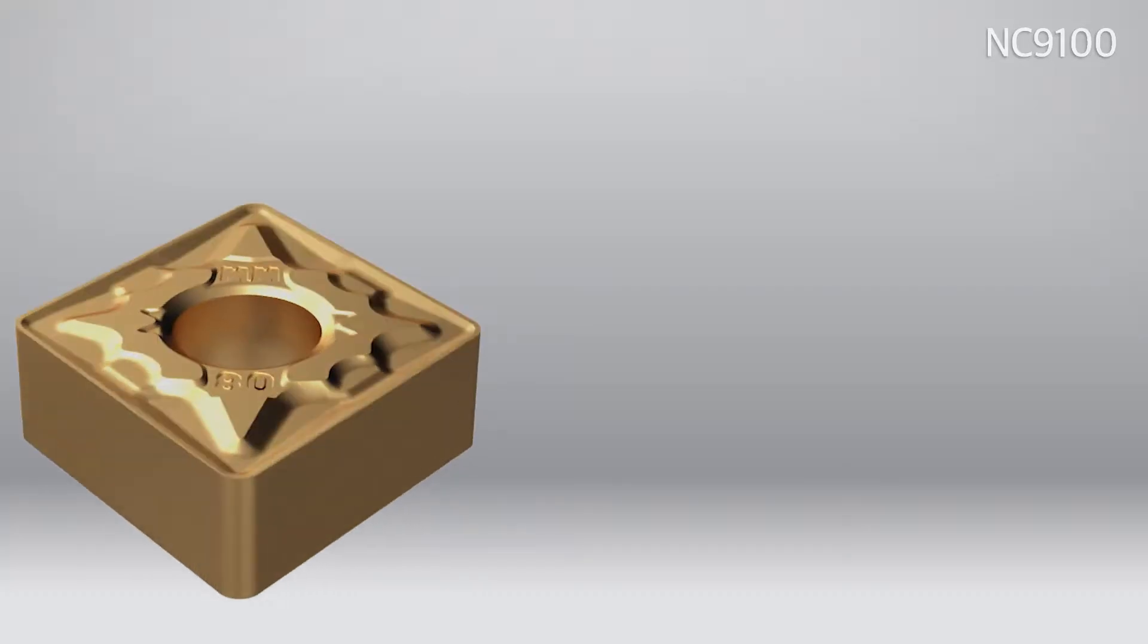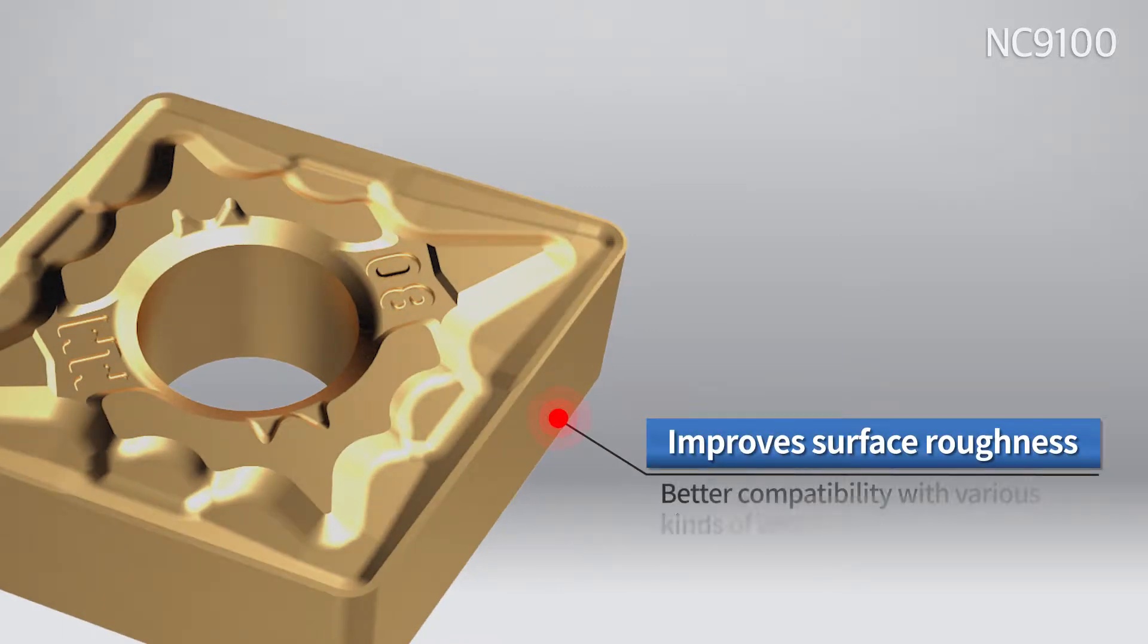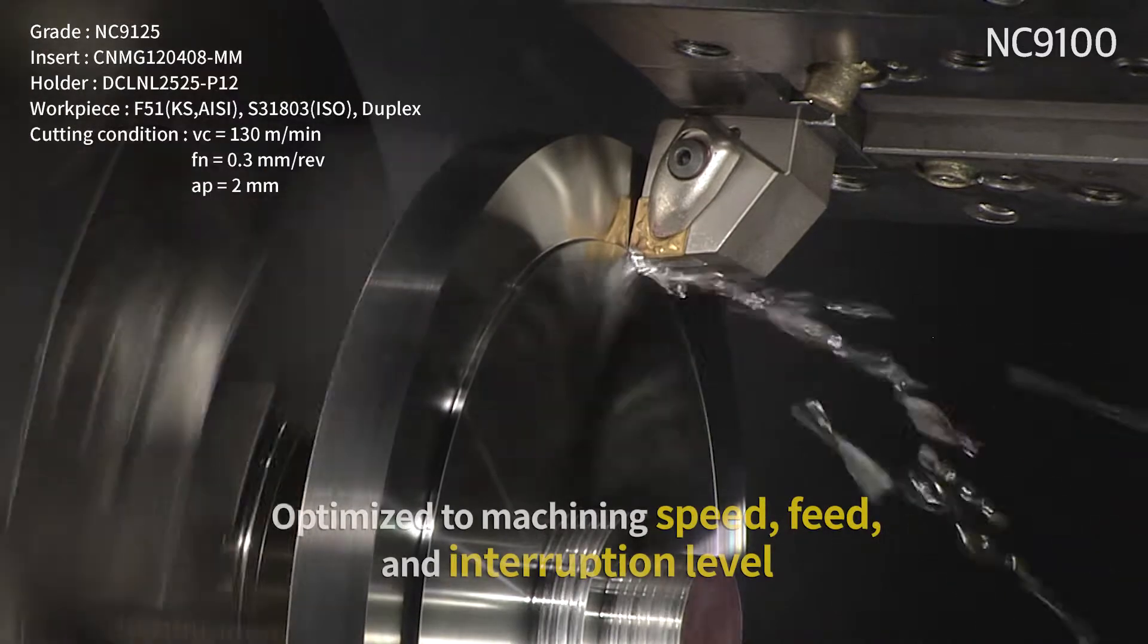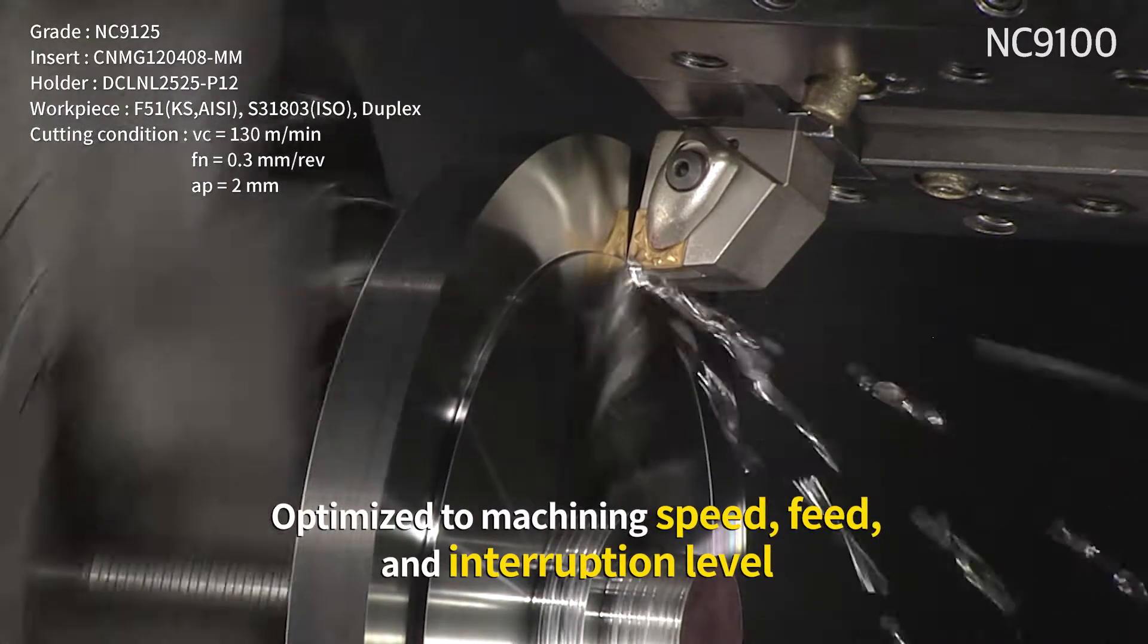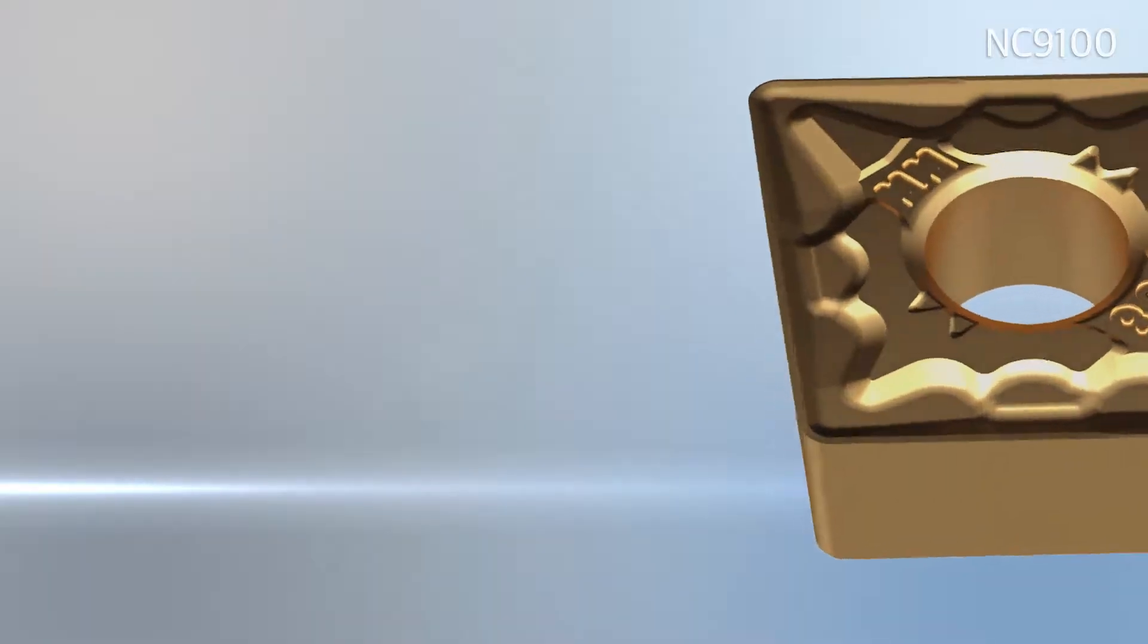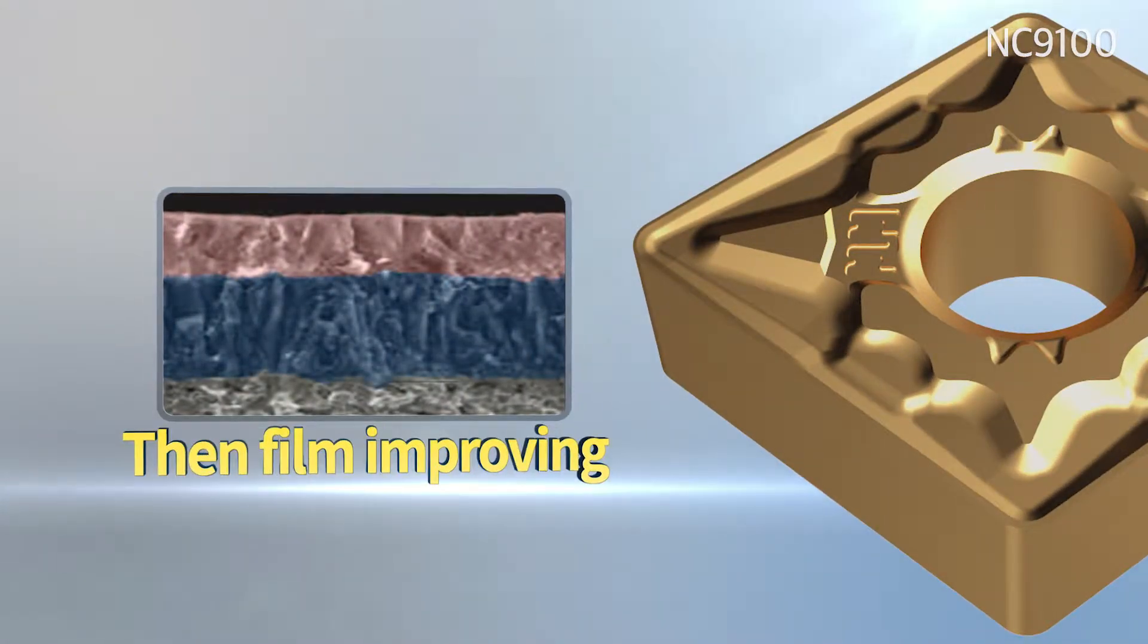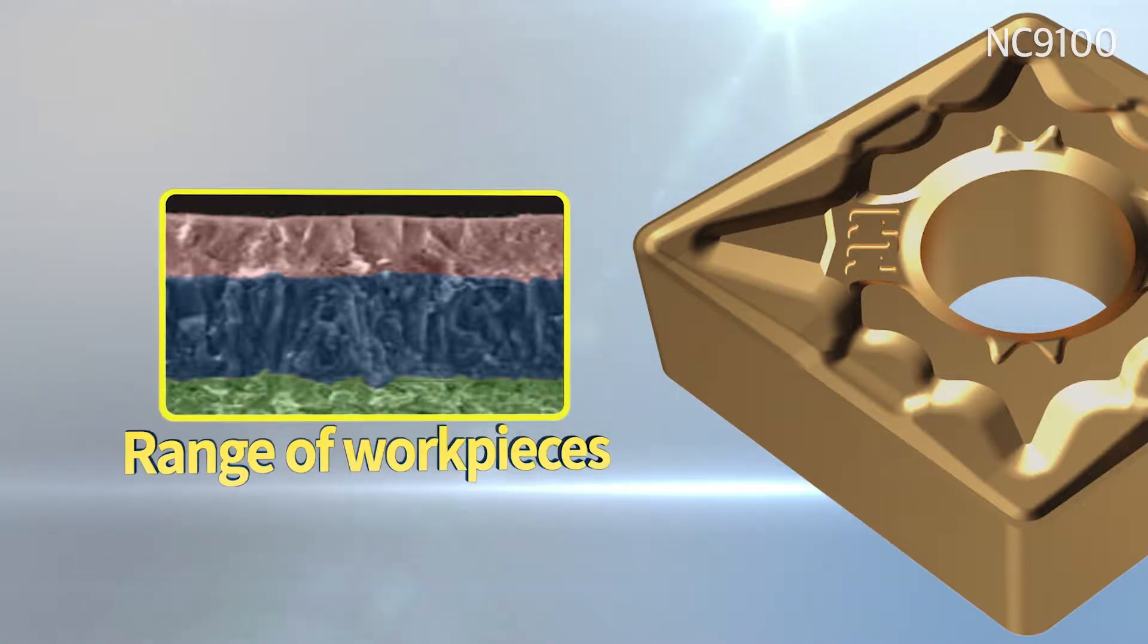By applying a lubrication coating, the existing surface roughness was improved as well as build-up edge resistance. It was optimized to the machining speed, feed, and interruption level. Heat resistance was improved by applying a new alumina layer and coating a film with improved chipping resistance.